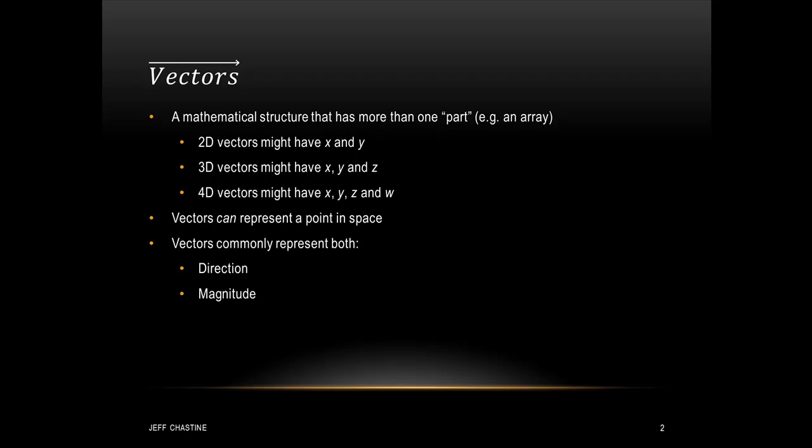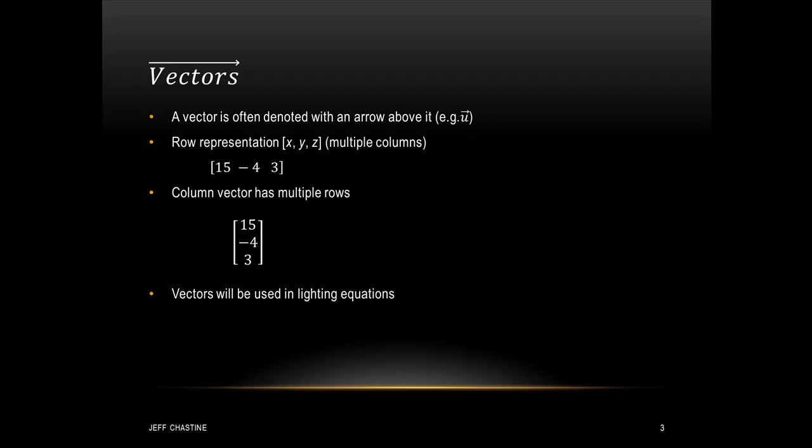We can interpret vectors a couple of different ways. One way is to interpret a vector as a point in space. However, most commonly, vectors are used to represent both direction and magnitude. To denote a vector, you often write an arrow above it — for example, you can see vector u here with an arrow above it. There are two ways we're going to represent a vector: a row representation with one row and multiple columns, or a column vector with one column and multiple rows. Vectors are going to be used in almost all of the lighting equations in this class.